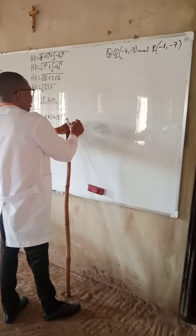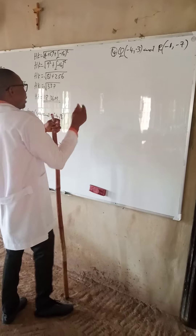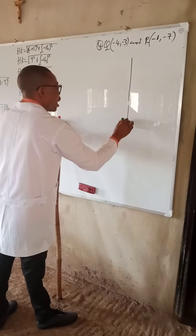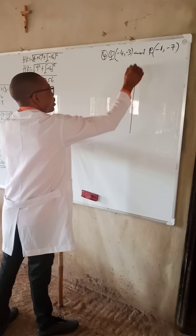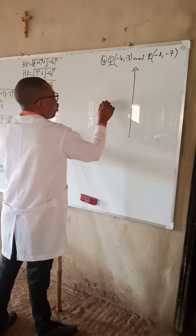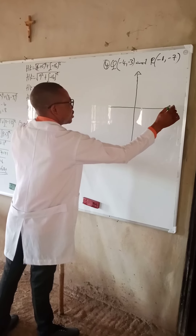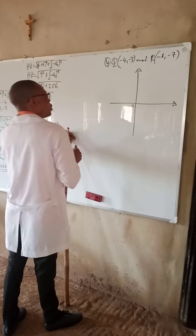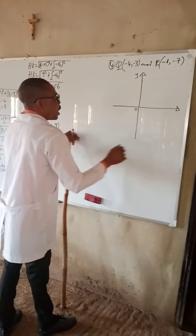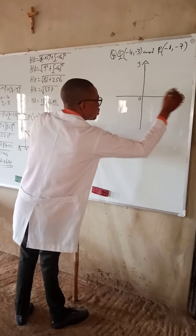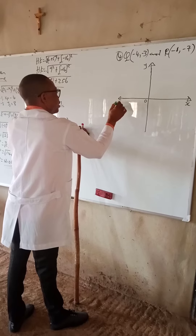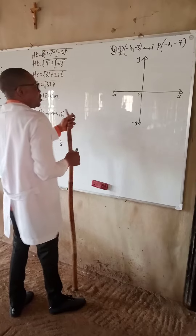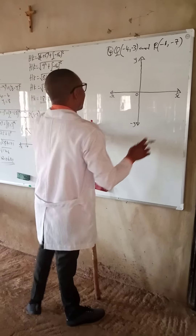We draw the Cartesian plane. We draw the y-axis and the x-axis, then locate the zero point at the middle. This is the positive y-axis, positive x-axis, negative x-axis, and negative y-axis.